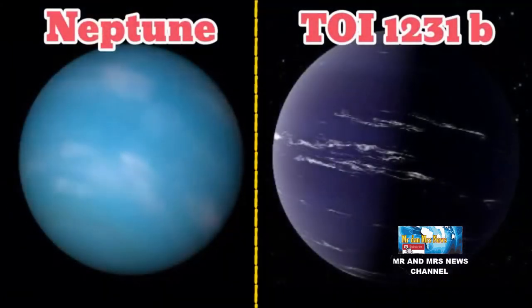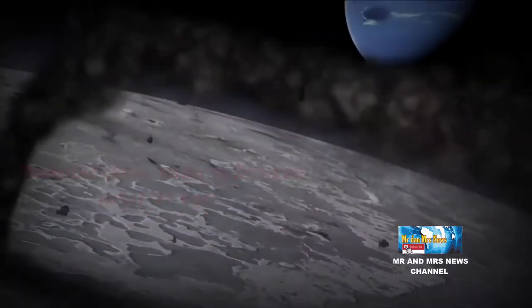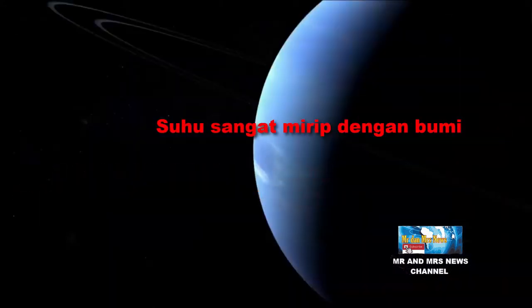Planet yang seukuran sub-Neptunus itu memiliki iklim sedang dengan orbit 24 hari, 8 kali lebih dekat ke bintang induknya daripada bumi ke matahari. Tetapi suhunya sangat mirip dengan bumi.